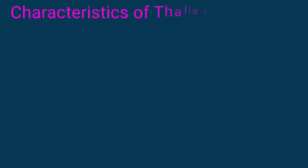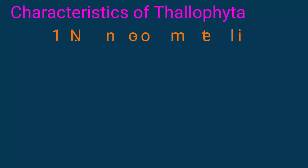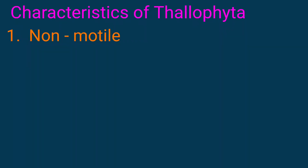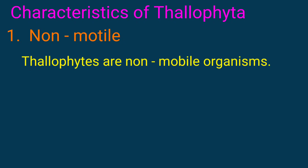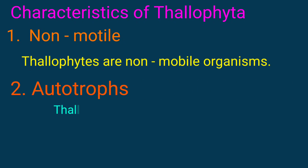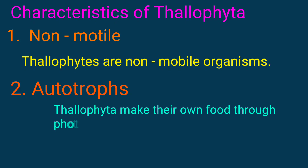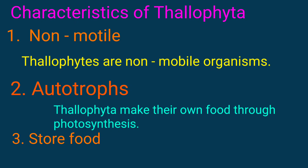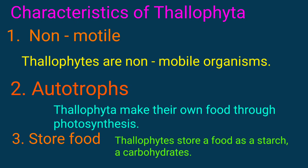Characteristics of Thallophyta: Non-mobile — Thallophytes are non-mobile organisms. Autotrophs — Thallophytes make their own food through the process of photosynthesis. Store food — Thallophytes store food as starch and carbohydrates.